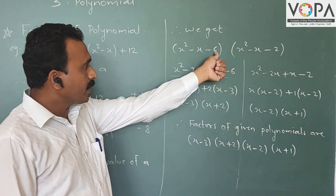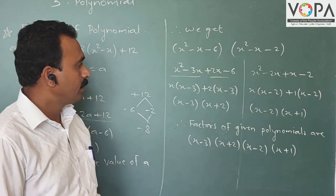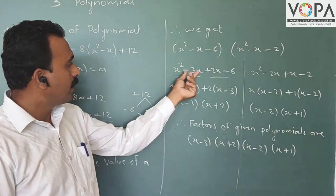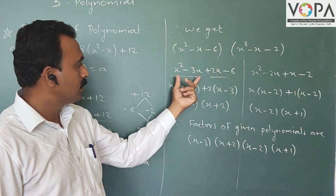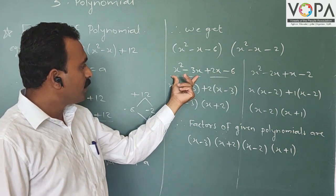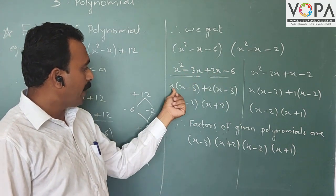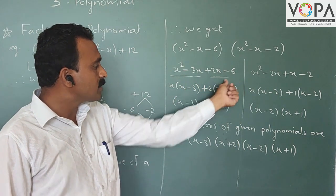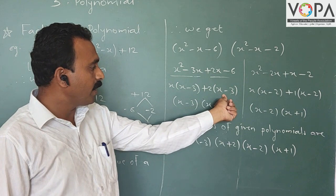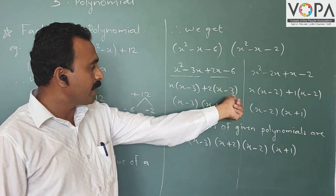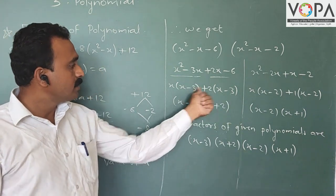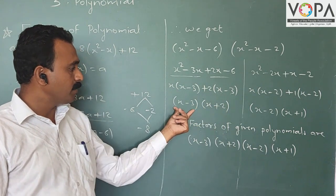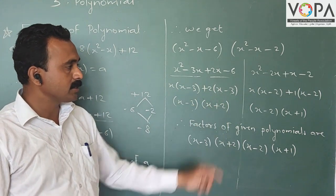For x² − x − 6: the product is −6 and the difference is 1, giving two factors 3 and 2. So we split −x as −3x + 2x. Grouping: in the first group x is common, giving x(x − 3). In the second group, plus 2 is common, giving 2(x − 3). So the factors are (x − 3)(x + 2).